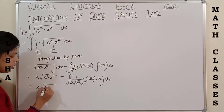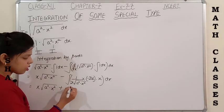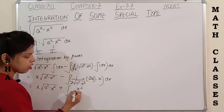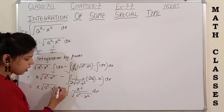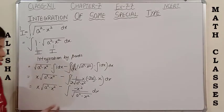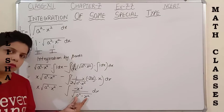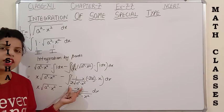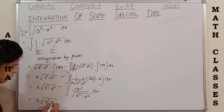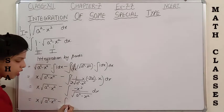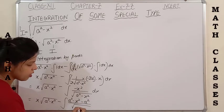In the next step we get x·√(a²−x²) + x²/√(a²−x²). Since we have a²−x² in the denominator, I want to create the same expression in the numerator. To do this, I add one a² and subtract one a², so the numerator becomes a²−x² in the form matching the denominator.